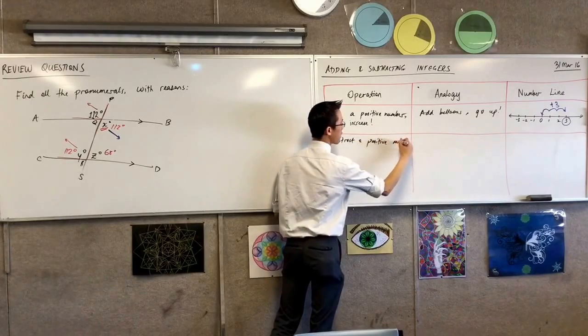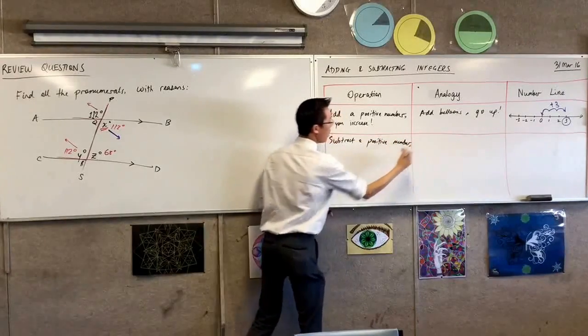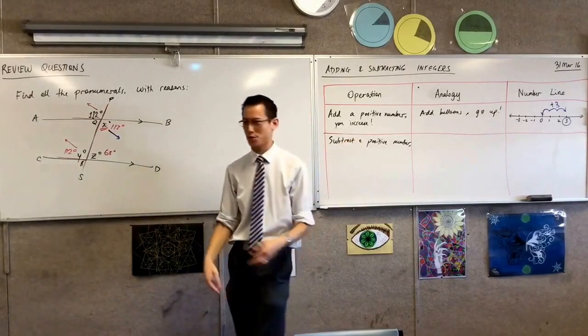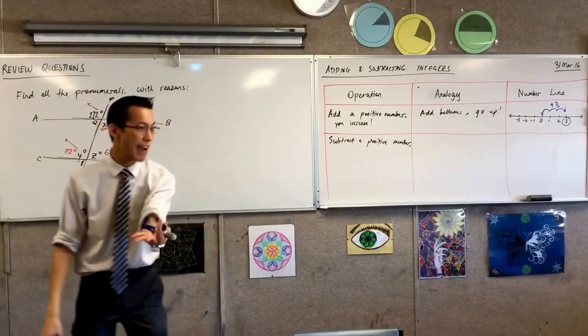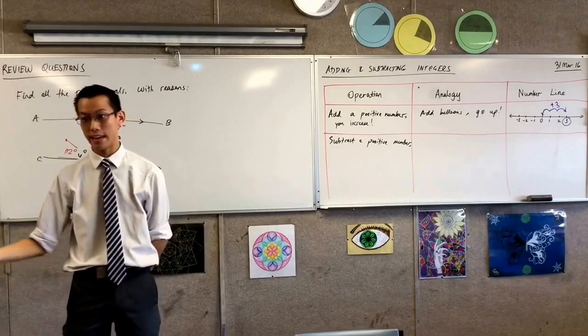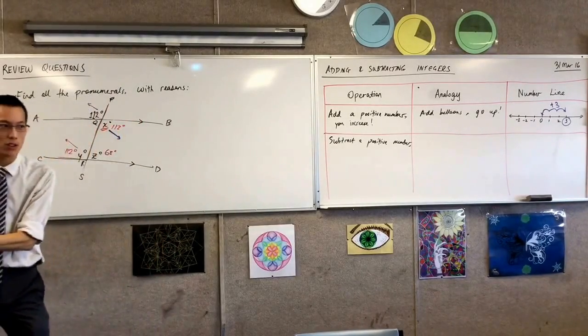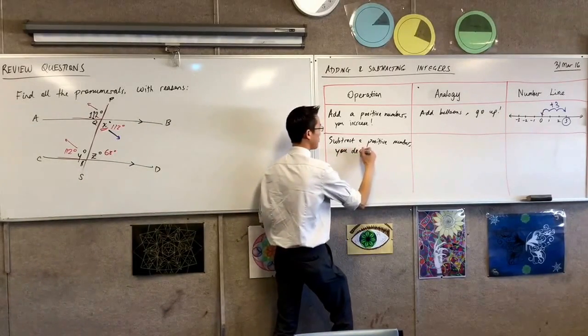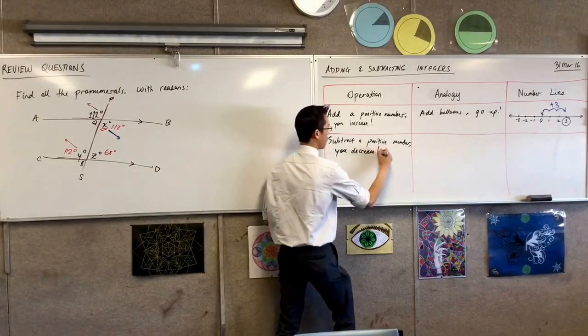If you subtract a positive number, and again, we've been doing this for years, then obviously, you're not going to increase, are you? If you start at zero, and you subtracted three instead of adding it, you would end up at negative three, which is smaller than where you started with. Does that make sense? So you decrease.